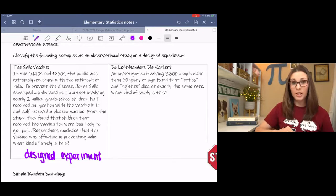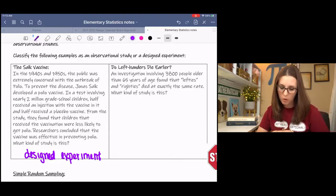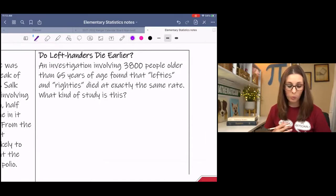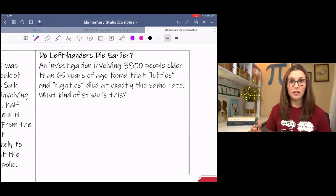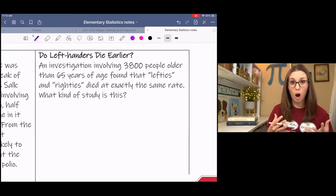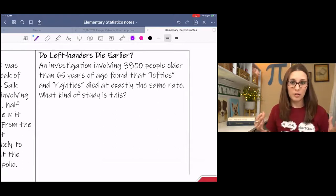Which leaves the next one. An investigation involving 3,800 people older than 65 years of age found that lefties and righties died at exactly the same rate. What kind of study is this? Basically, back in the day, they viewed left-handedness as a disability or as like a flaw.